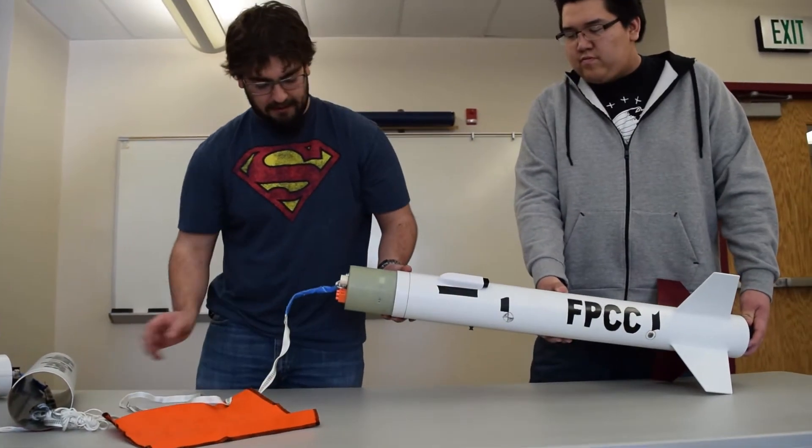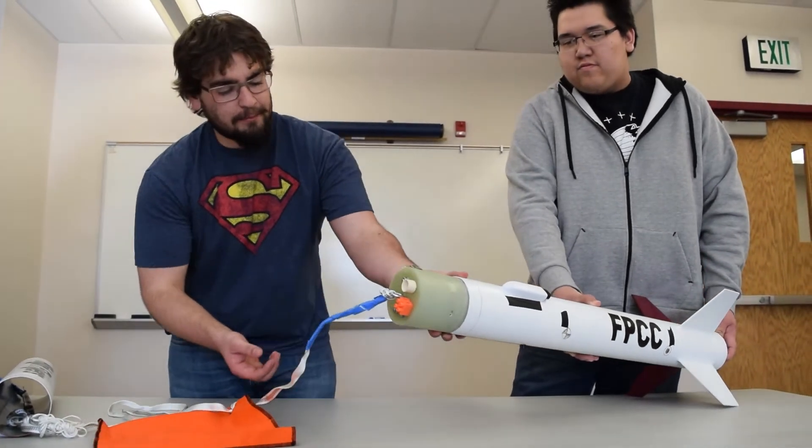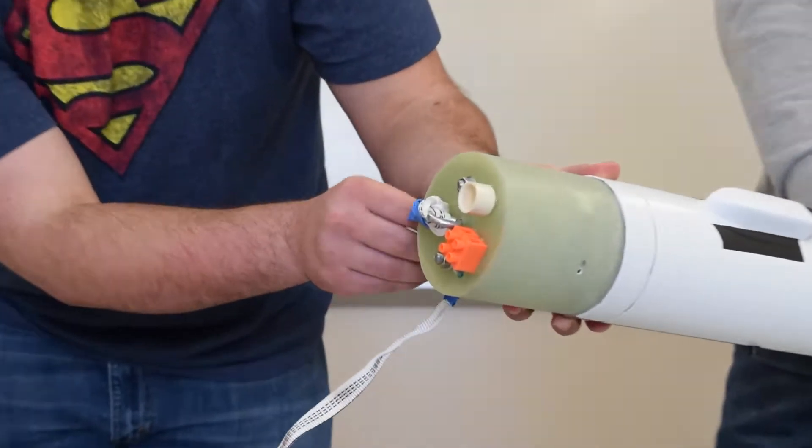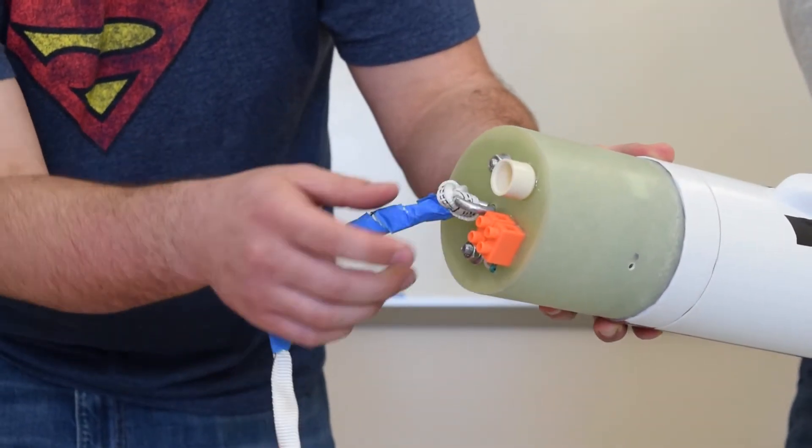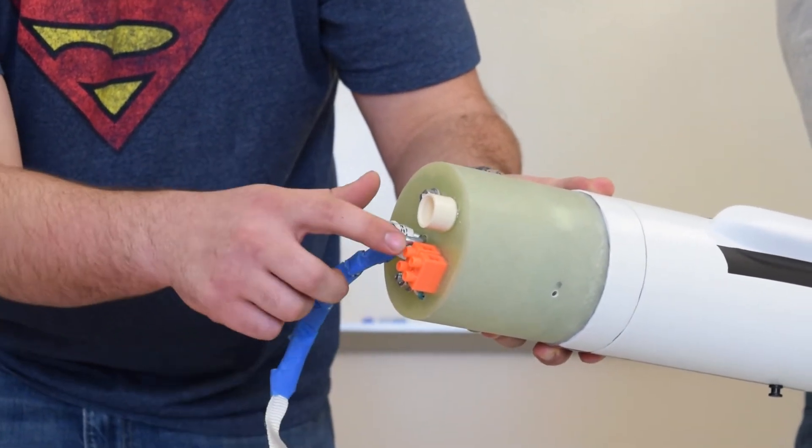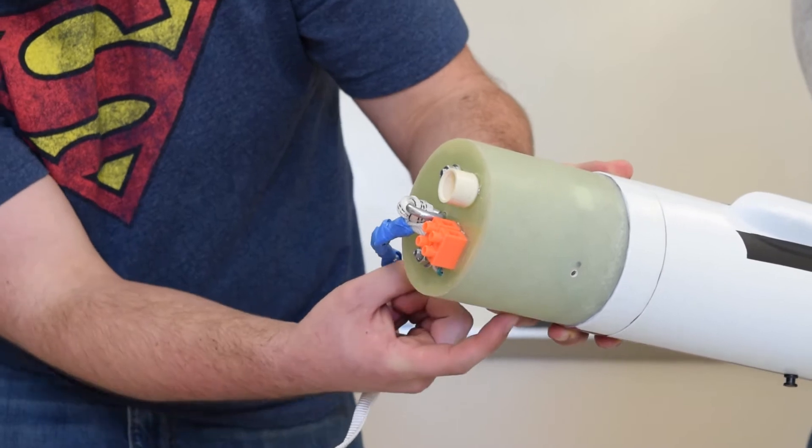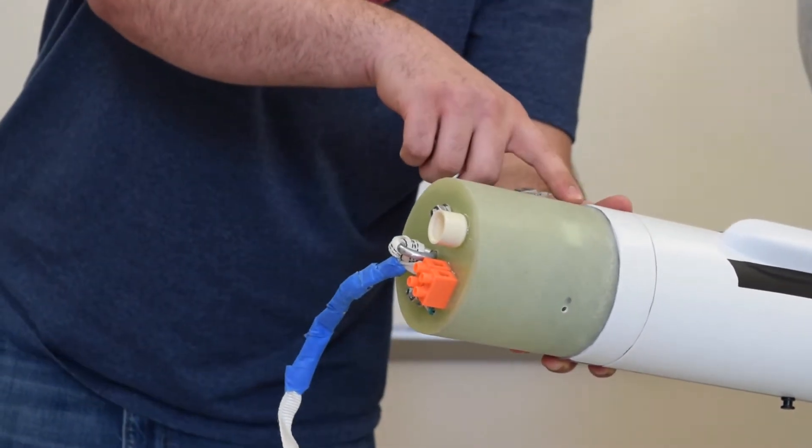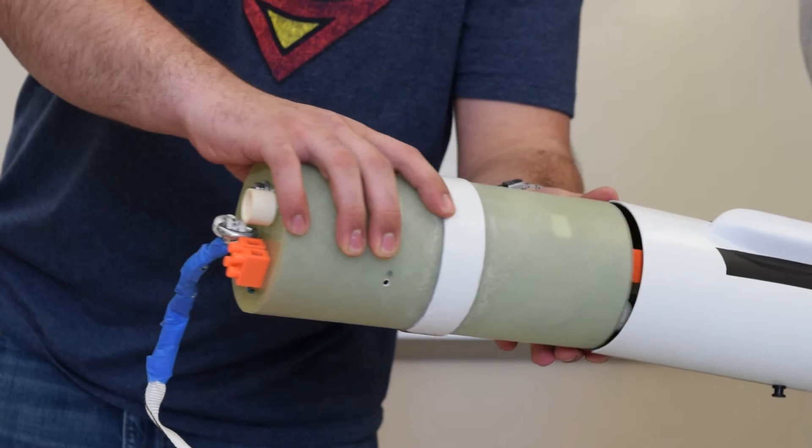So now we have our e-bay, and if you look on the top of the e-bay here, you have the little bowl for the ejection charge, and then you have the two terminals to connect the ejection charge to, which run inside the e-bay here. So we'll go ahead and pull that out.